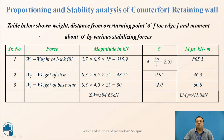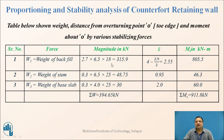A table shows the weight, distance from the toe edge (turning point O), and stabilizing moment for each component. Weight of backfill = 2.7 m × 6.5 m × 18 kN/m³. Weight of stem = 0.3 × 6.5 × 25 = 48.75 kN. Weight of base slab = 0.3 × 0.4 × 25 = 30 kN. The total of all stabilizing weights is 394.65 kN.